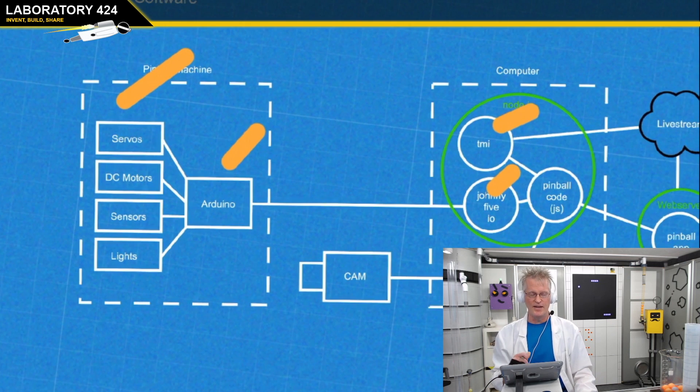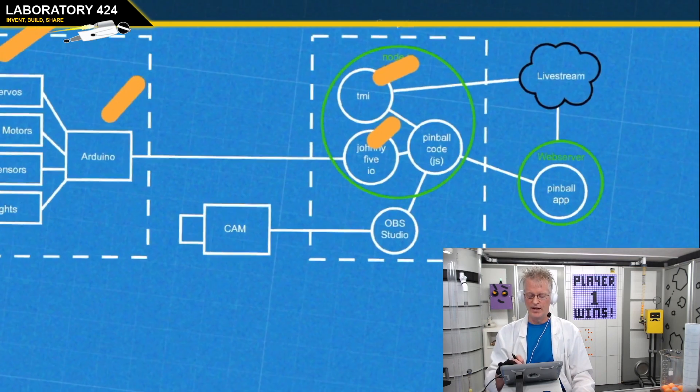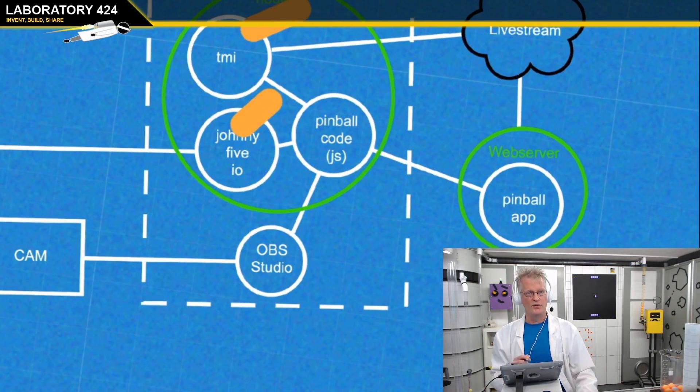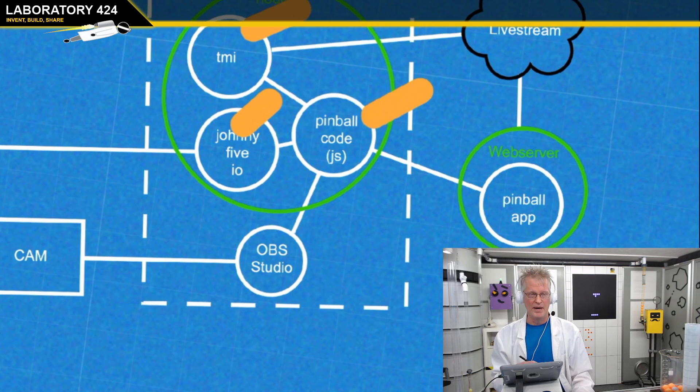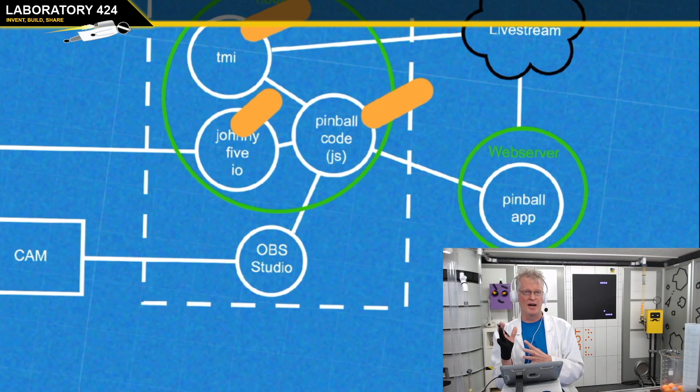So you have your pinball machine. You have your Arduino talking to Johnny 5 with all the wonderful sensors and actuators, the thing that makes it, brings it to life. And all that fun stuff. And then your code, this is the magic sauce, more magic sauce. We're putting lots of magic sauce on it today. The pinball code that you write, that's going to connect to not only Johnny 5 and TMI.js to talk to the people, but you're also going to connect to OBS.